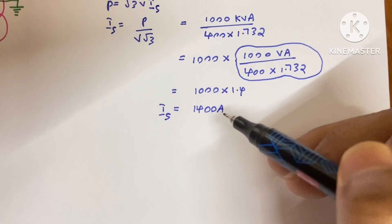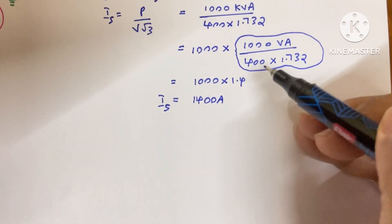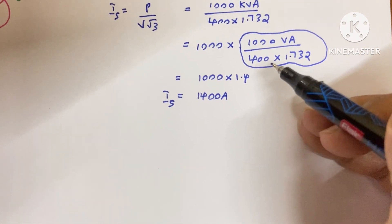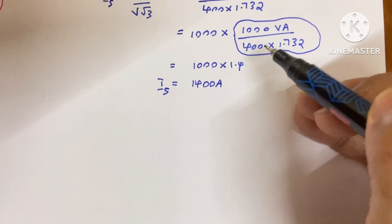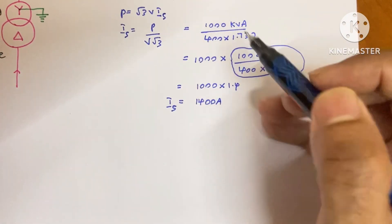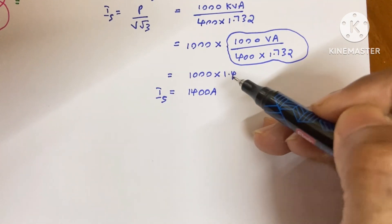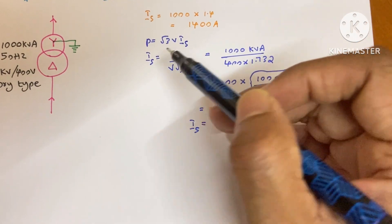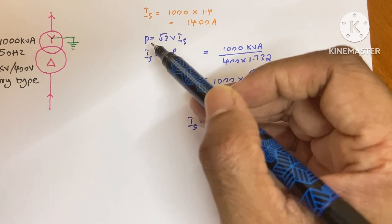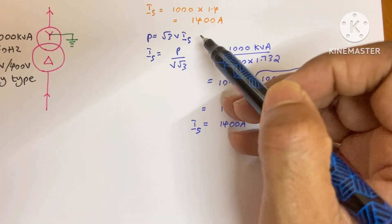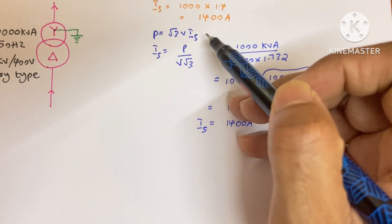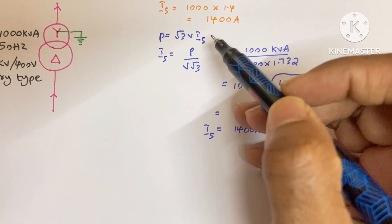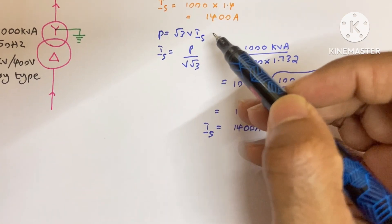One important thing to remember: this 1.4 is valid only if the secondary side voltage is 400 V. If your transformer's secondary voltage is different, you need to work through the full equation to find your own magic value — it will be different. Also, our power here is in kVA, so we do not need to include cos theta or power factor. Power factor is only required when the power is given in kilowatts.